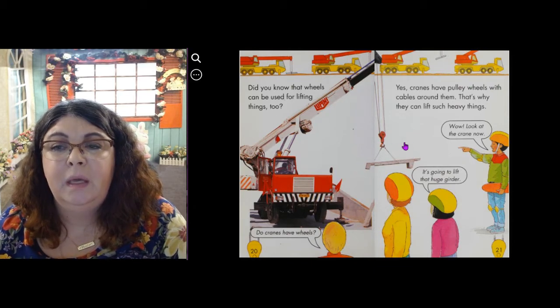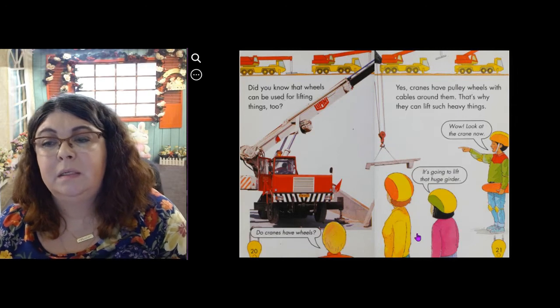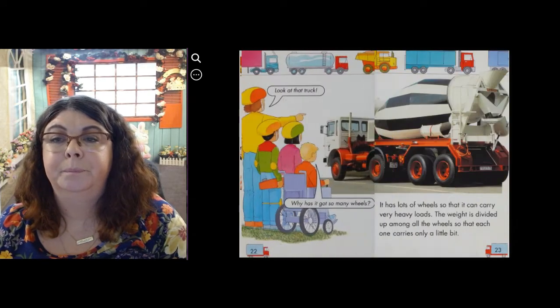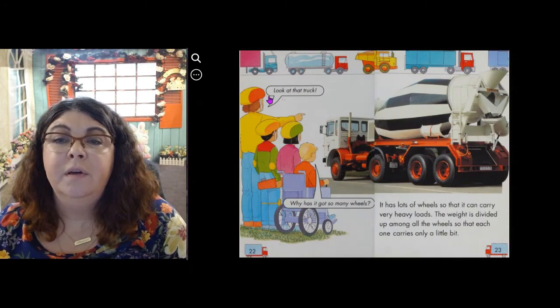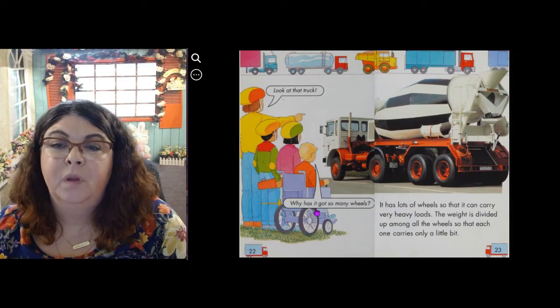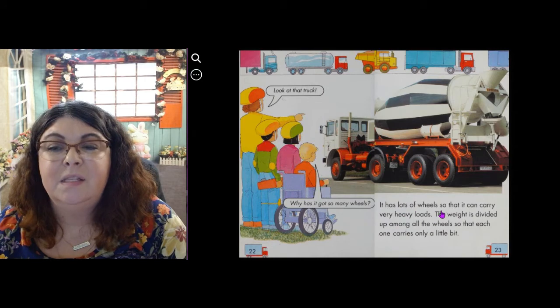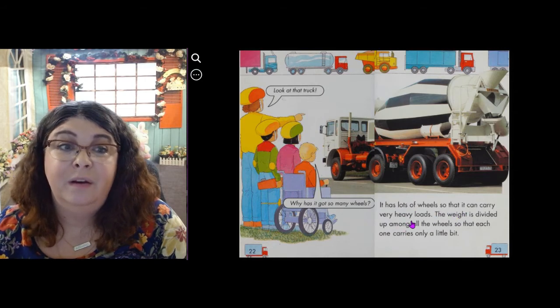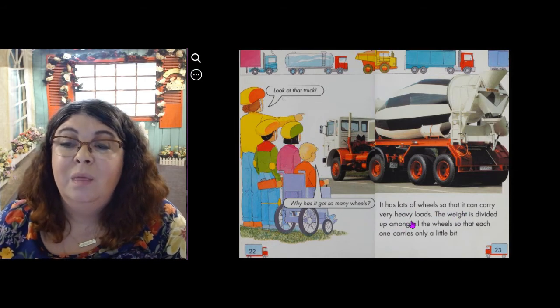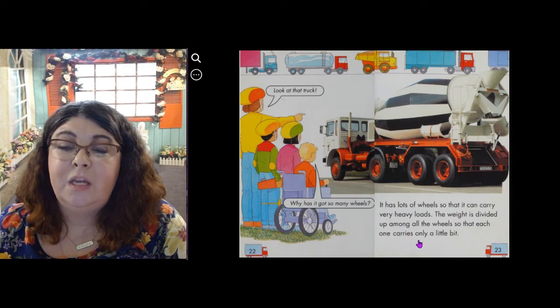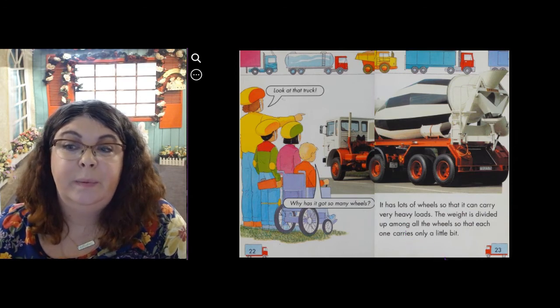This is a big piece of cement. Look at that truck. Why has it got so many wheels? It has lots of wheels so that it can carry very heavy loads. The weight is divided among all the wheels so that each one carries only a little bit.